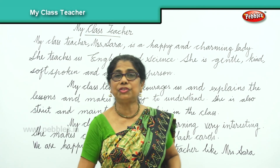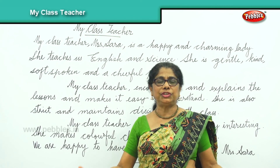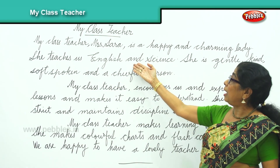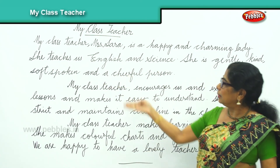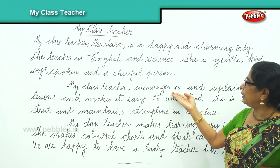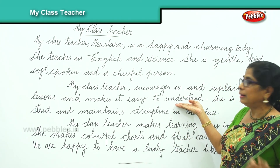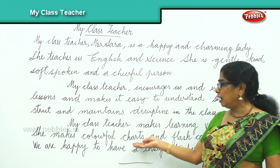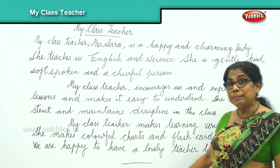If you want to write a lengthy composition, you can add: whether she is married, whether she has children, how long she has been teaching in that school, whether your sister also studied under her, what experiments she conducts in science, how she encourages children, what tools she uses to explain, and finally how children begin to love her, remember her, and score good marks.